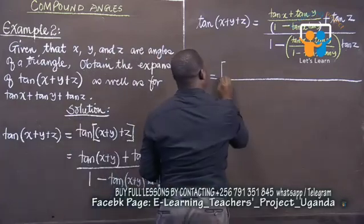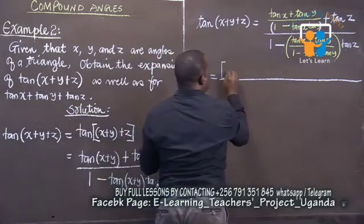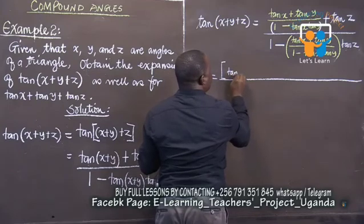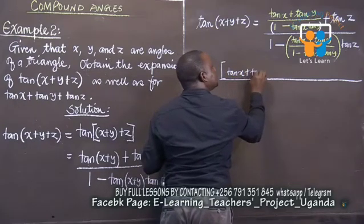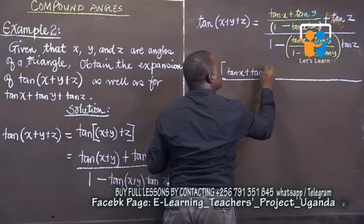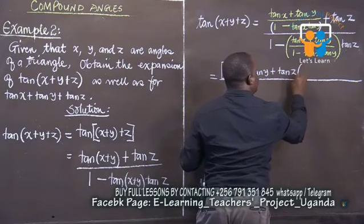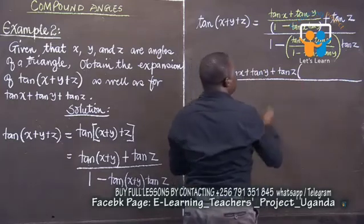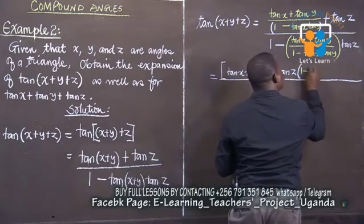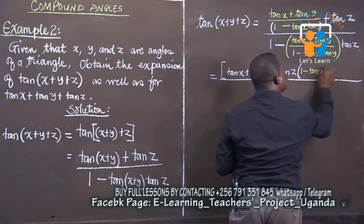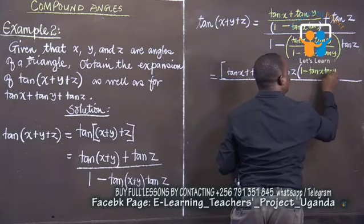So let's go quickly. We have this one here. We shall remain with our tan x. See, I've already done this one here, plus tan y. And this is plus, we have tan z into 1 minus tan x tan y.